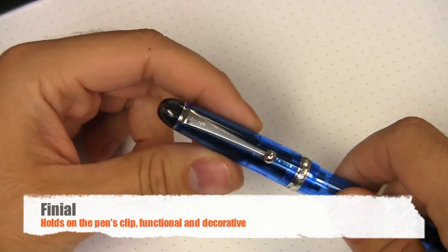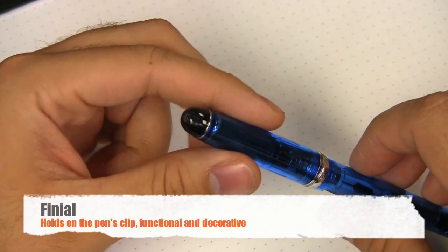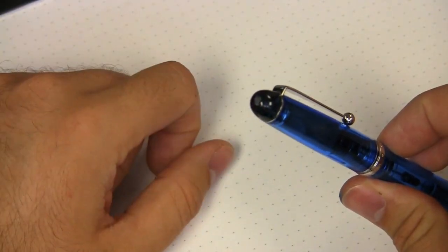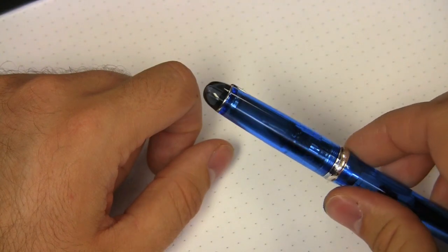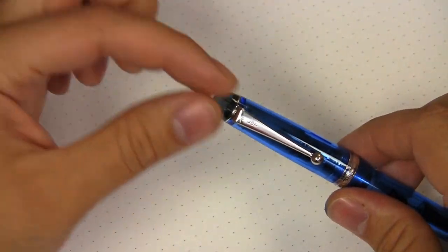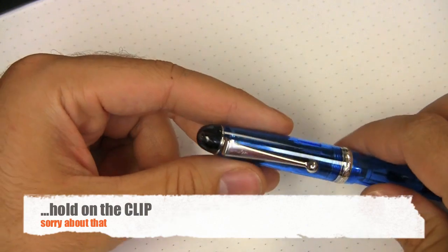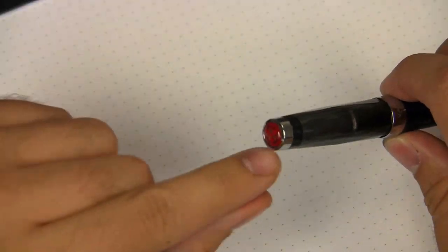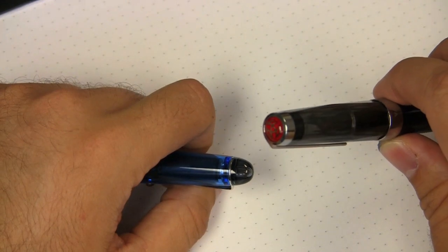The finial refers to the cap, the very top part of the cap of the pen. In this case, the body and the cap of the pen are blue, but the finial is a smoke color. It's a decorative item, but it's also functional. It helps to hold on the cap. A lot of times it'll be jazzed up in certain ways. It might have the company's logo on it like so, but that decorative part is always referred to as the finial.